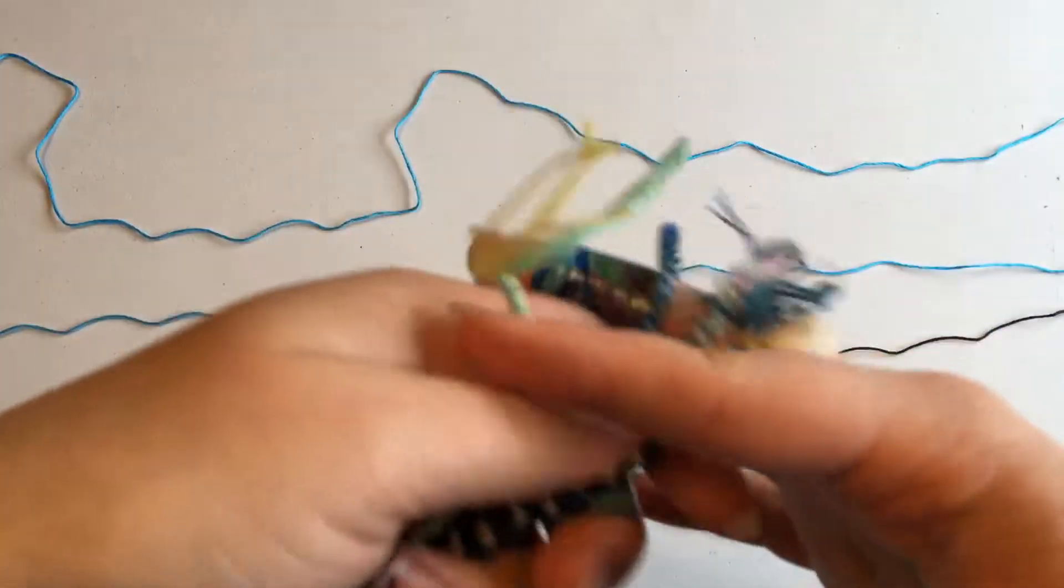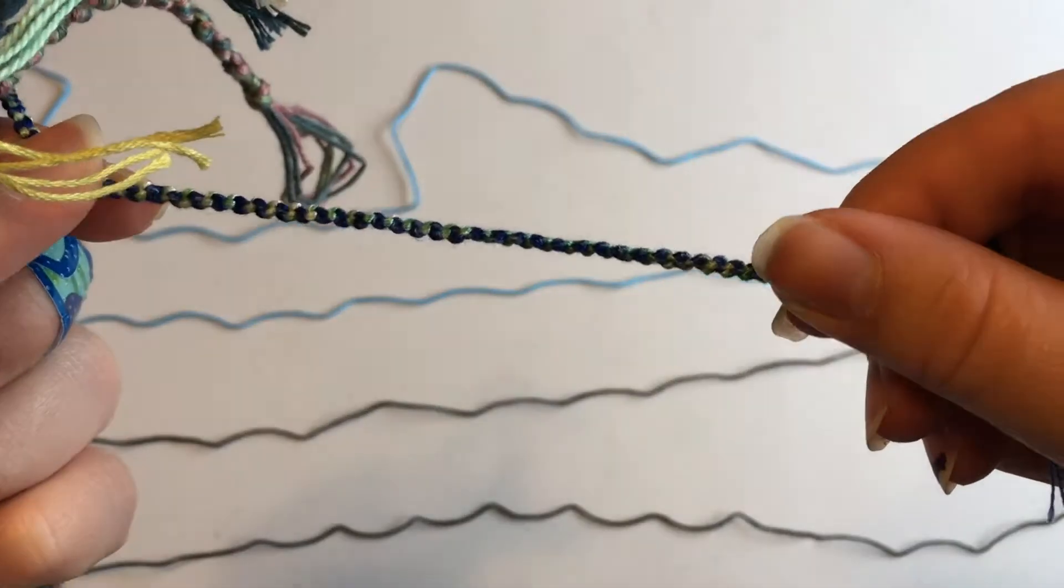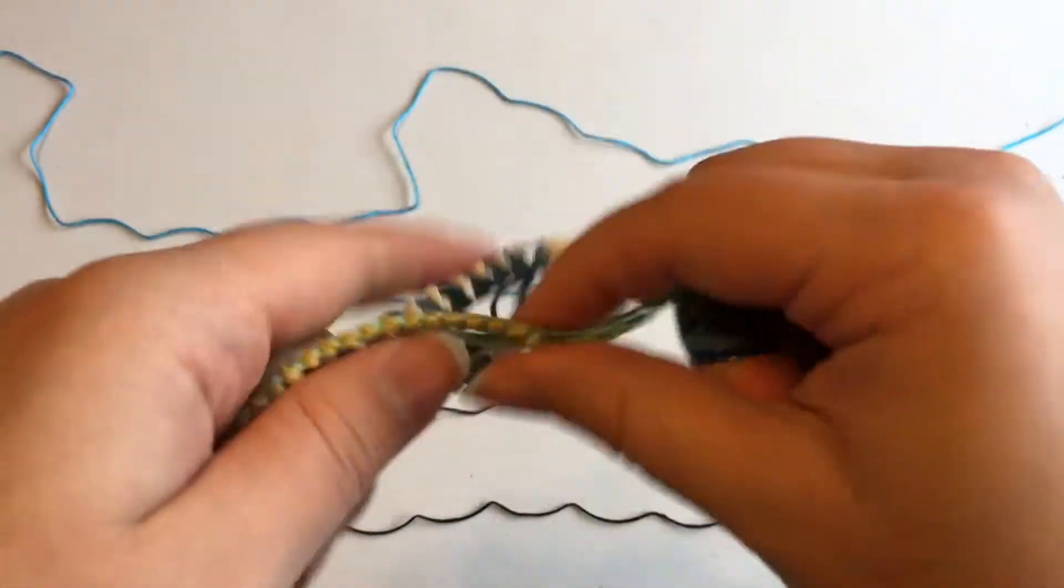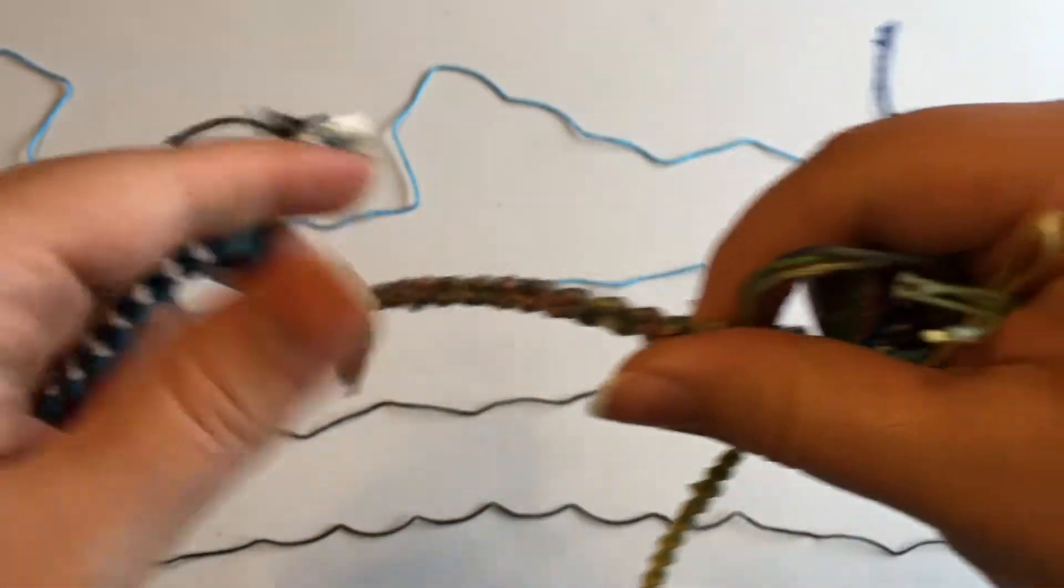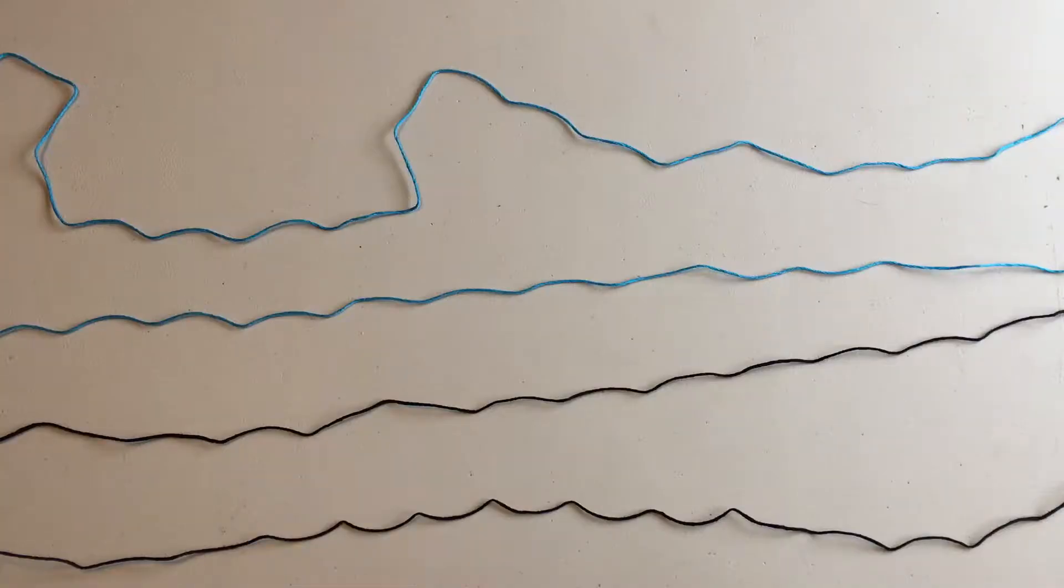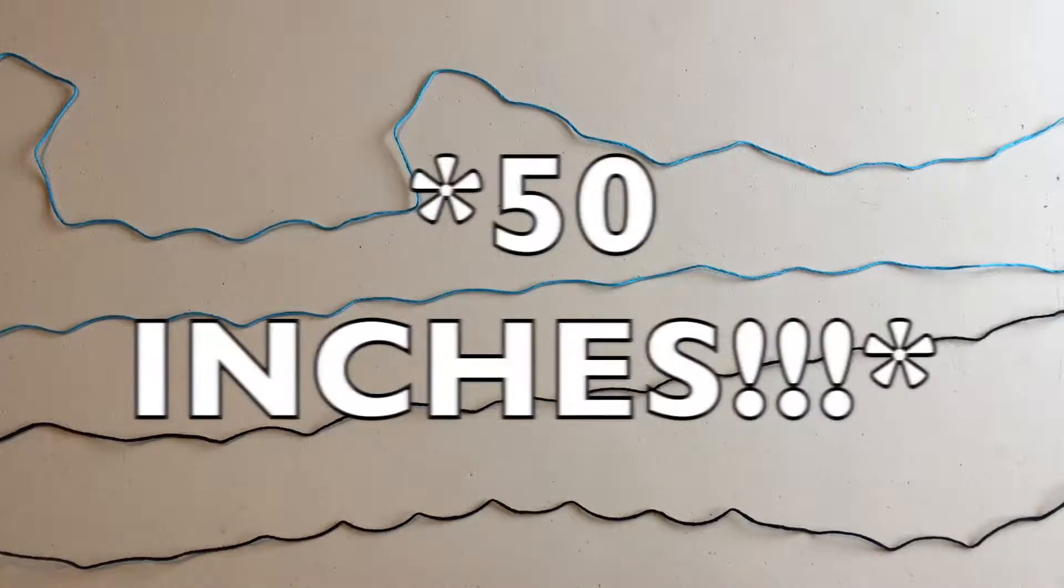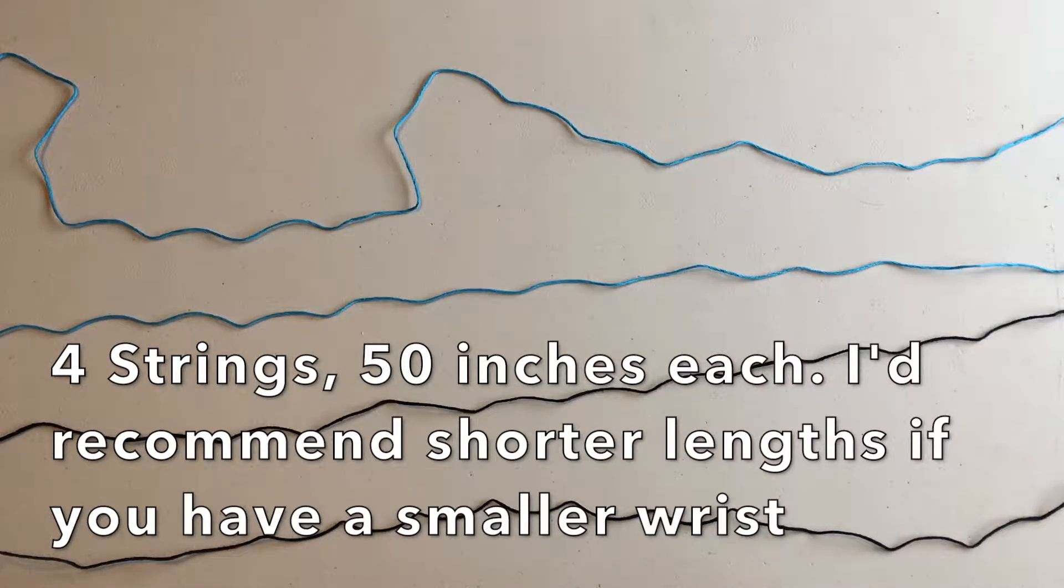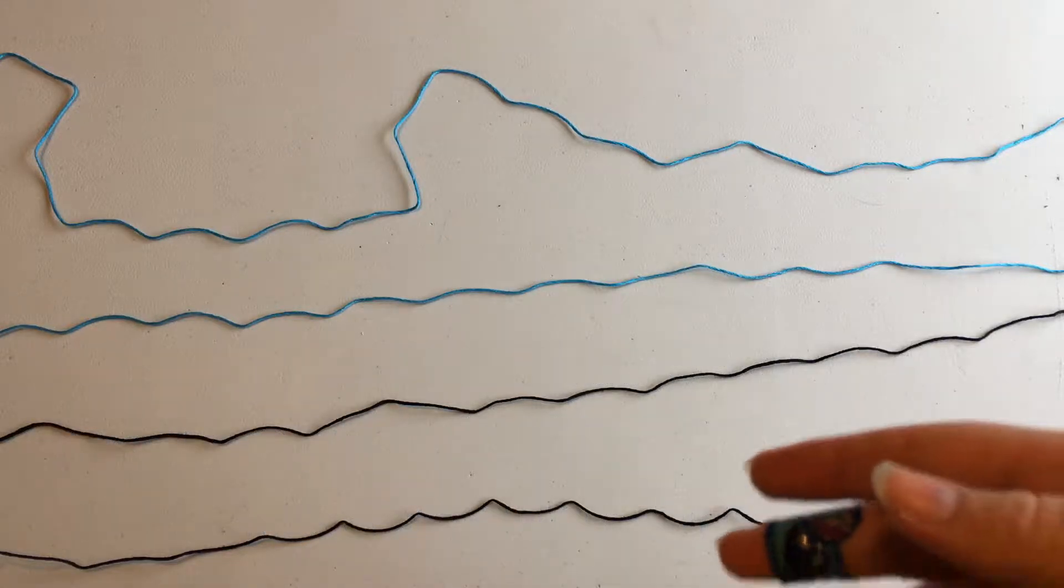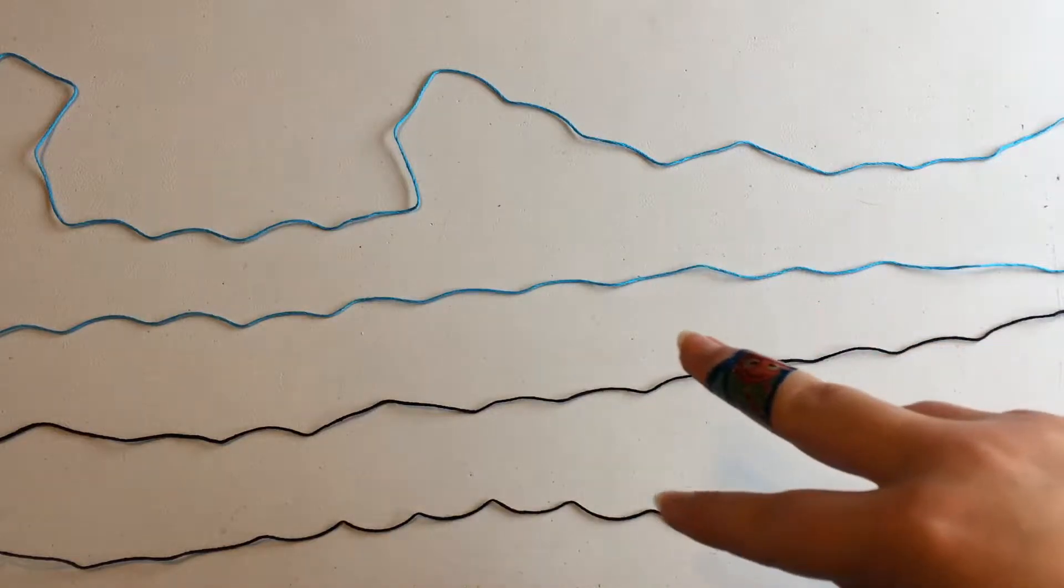Now is when you determine the thickness of your bracelet depending on how many strings you use. This one was made with two strings, this one was made with four strings, this one was made with six strings, and this one was made with eight strings. For this video I'm going to be using four strings because that makes the best thickness in my opinion. They are all 40 inches each, but if you have a smaller wrist I'd recommend using less inches. You can use four different colors, but for the purposes of this video I'm just going to be using black and blue.